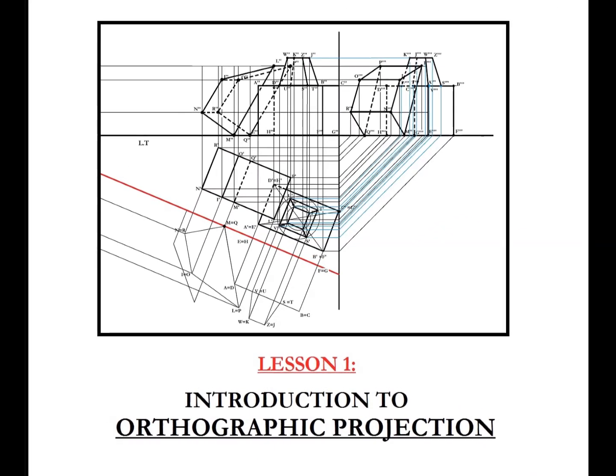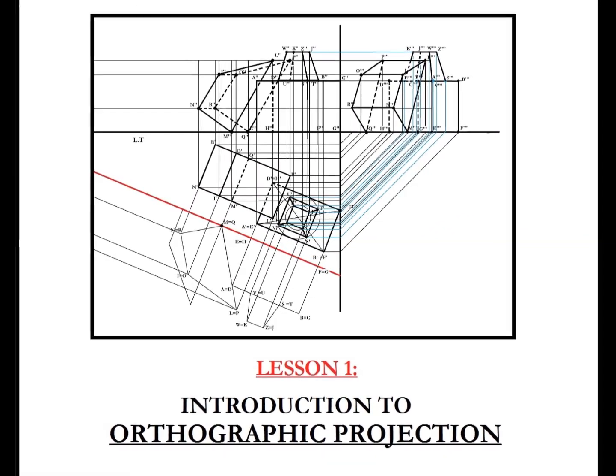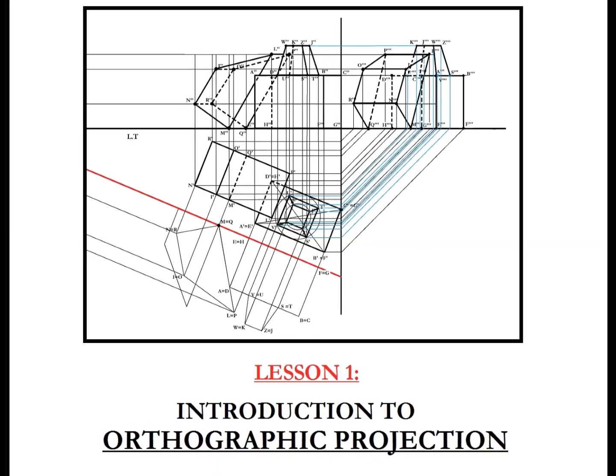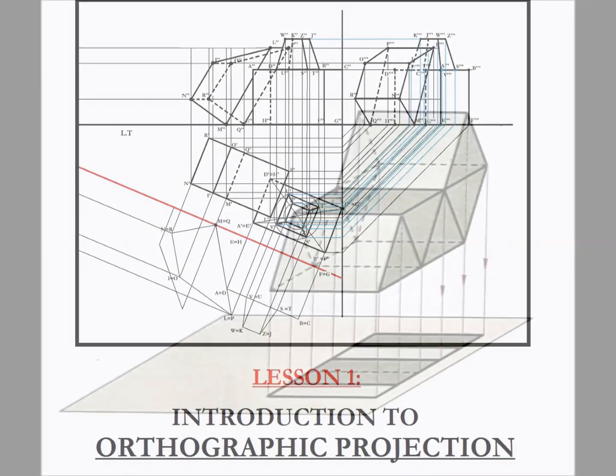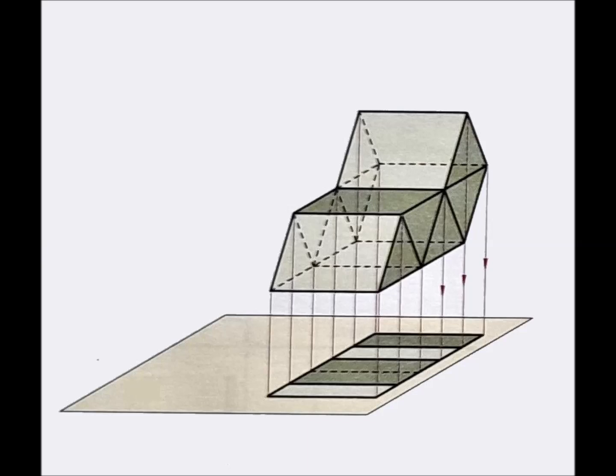An orthographic projection is certainly the most used representation technique in engineering drawing. Its purpose is to represent an object in space, and therefore a 3D object, on a drawing sheet, and therefore on a plane, in a 2D space.